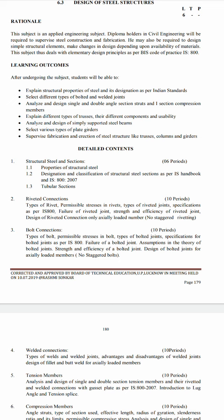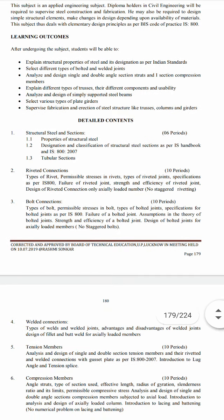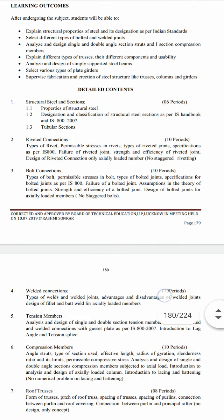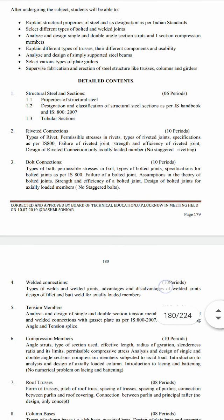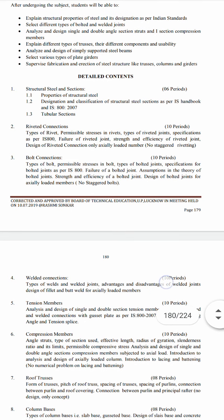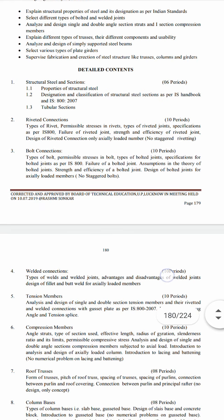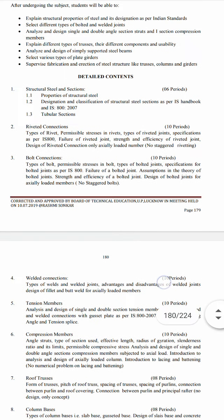Third topic is tubular sections. The second chapter covers riveted connections: types of rivets, permissible stress in rivets, types of rivet joints, specifications as per IS 800, failure of riveted joints, strength, effects, and efficiency of riveted joints, and design of riveted connections for axially loaded members only — no staggered rivets.